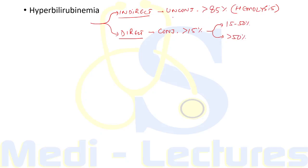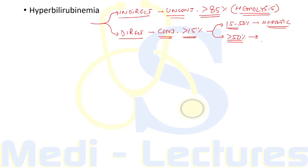Hyperbilirubinemia is termed indirect when unconjugated bilirubin is more than 85% of total bilirubin, usually due to hemolysis. It is termed direct when conjugated bilirubin is more than 15% of total. Further, if conjugated bilirubin is 15–50% of total, the likely cause is hepatic; if more than 50%, the likely cause is obstruction.